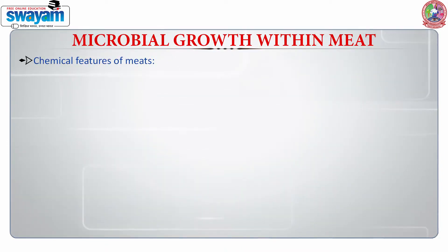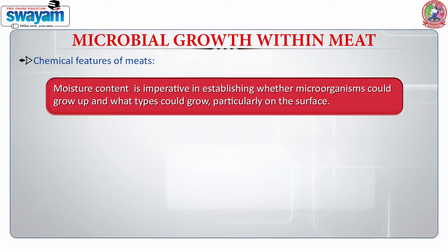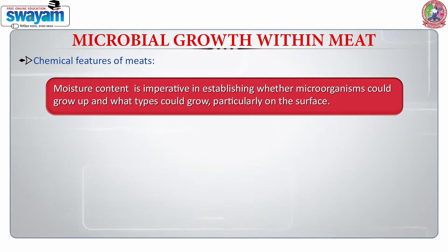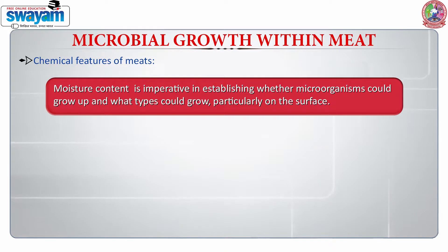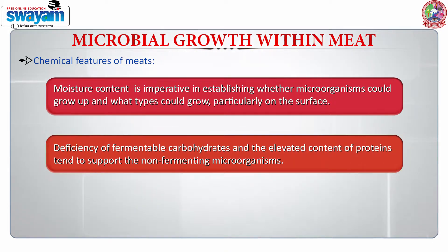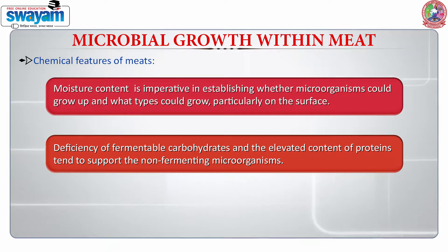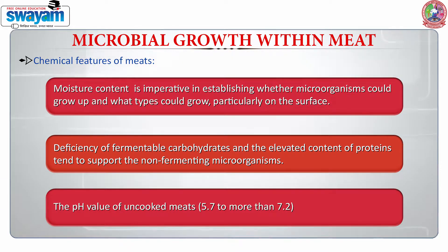When we talk about microbial growth within the meat, it is dependent upon the chemical features of the meats — such as how much is the moisture content, because this moisture is helpful in establishing whether microorganisms could grow and what type could grow. It is very important to see the amount of fermentable carbohydrates. If there is a deficiency of fermentable carbohydrates and an elevated content of proteins, then it tends to support the non-fermenting microorganisms. The pH of uncooked meat also plays a very critical role, especially the pH range of 5.7 to not more than 7.2.